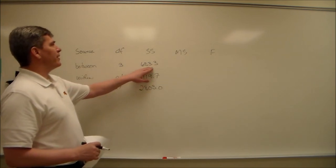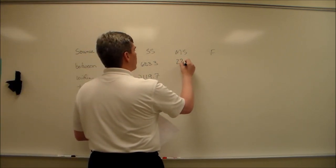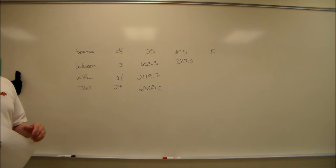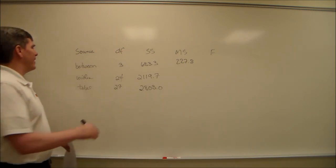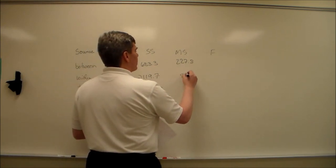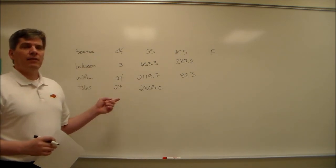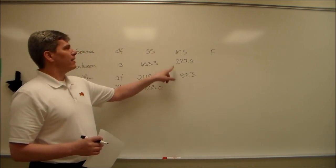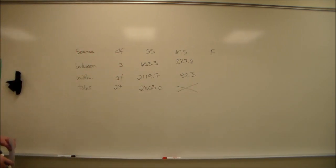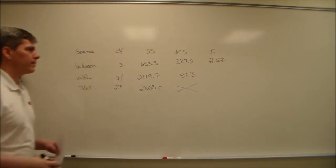Write what I write, not what I say. Total is 2803.0. And again, note that the degrees of freedom between plus degrees of freedom within equals degrees of freedom total. And the sum of squares between plus the sum of squares within is equal to sum of squares total. That would be helpful. The mean squared, again, is always the sum of squares divided by the degrees of freedom. 683.3 divided by 3 is 227.8. That is our estimate for the variance between. The mean squared within, or the mean squared error, is 2119.7 over 24. The F statistic is just going to be the mean squared between divided by the mean squared within, 2.57. For what we're doing, that's irrelevant.